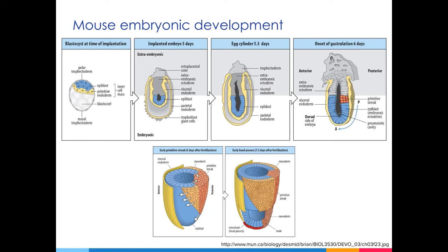The primitive streak elongates until it reaches the bottom of the cup, at which point the node becomes visible. As in the human, epiblast cells converge at the primitive streak and migrate through it, spreading out anteriorly and laterally between the ectoderm and the extraembryonic endoderm to form the mesoderm. The definitive embryonic endoderm forms as cells passing through the streak displace the visceral endoderm lining the outside of the cup. As the streak regresses beginning at the node — the most anterior part of the streak — the notochord is laid down.